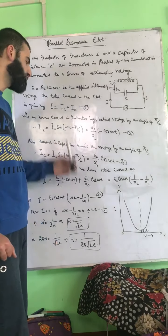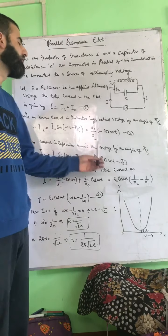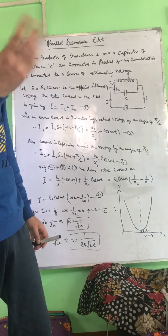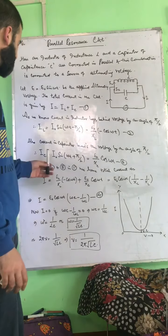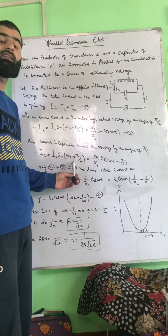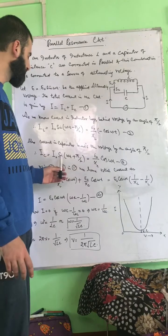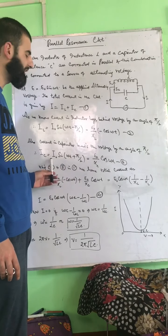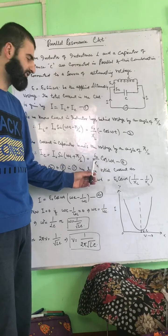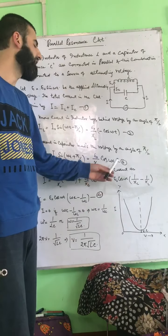Similarly, in the capacitor circuit, the current leads the voltage by an angle of π/2. So the capacitor current IC = I₀ sin(ωt + π/2). Replacing I₀ with E₀/XC, and since sin(ωt + π/2) = cos(ωt), we get IC = (E₀/XC) cos(ωt).